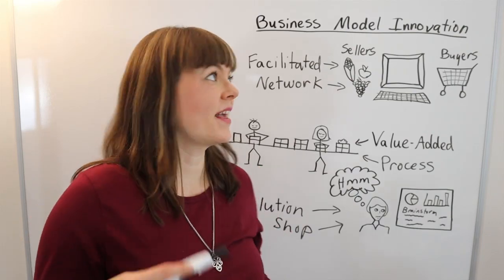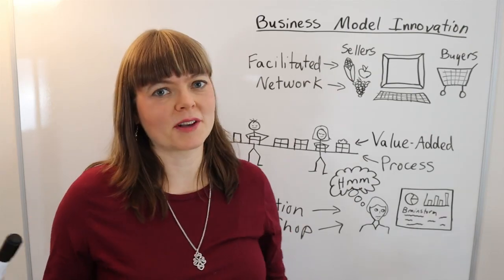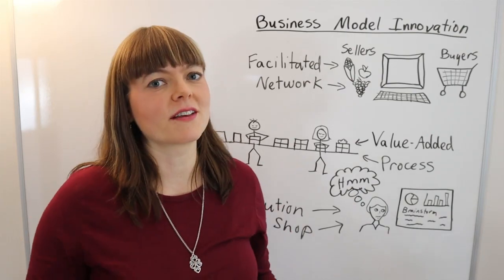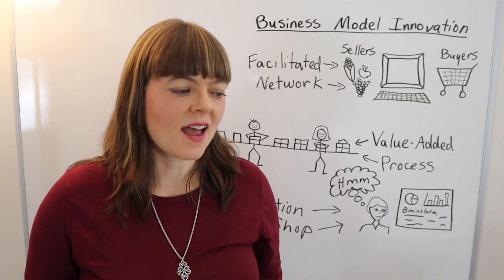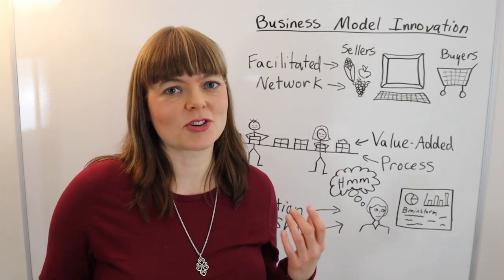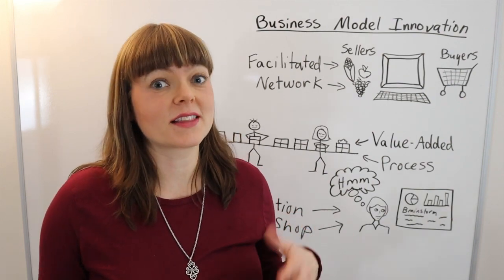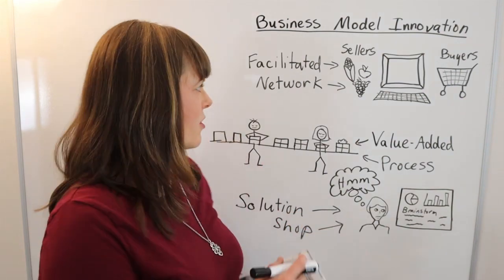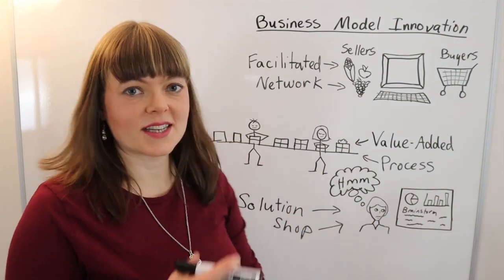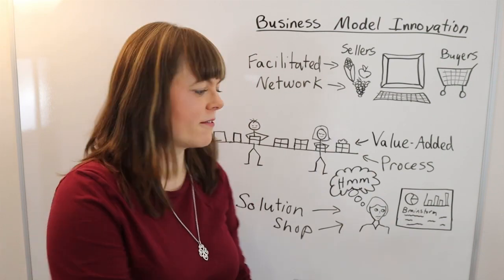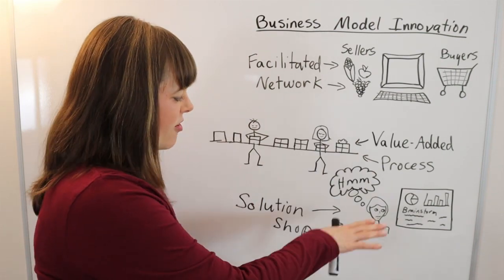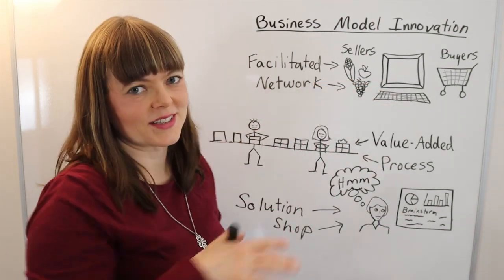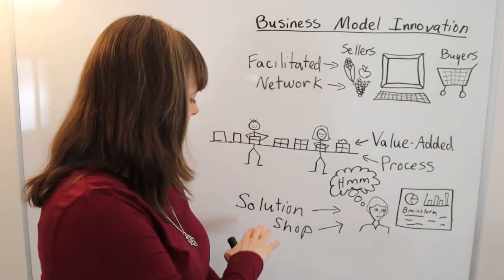I would like to explain the evolutionary process of business model innovation as Clayton Christensen lays it out. He goes through three stages that are sort of evolutionary, moving from the bottom up on this diagram.